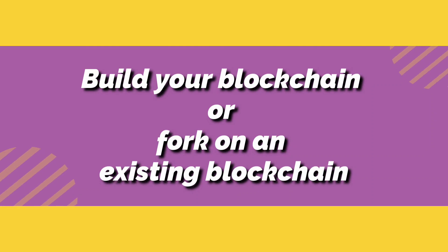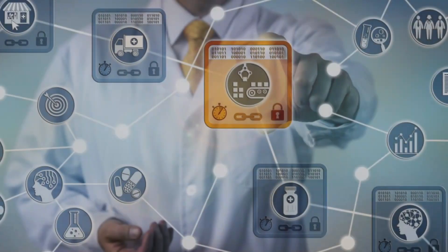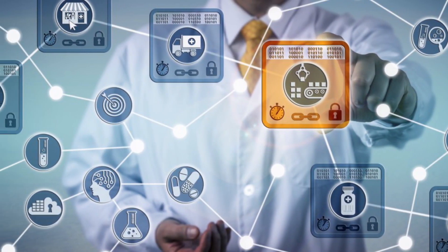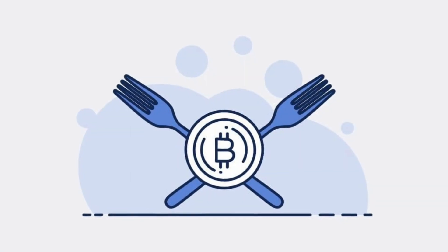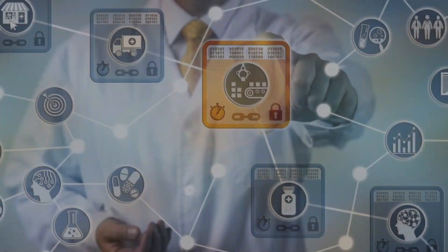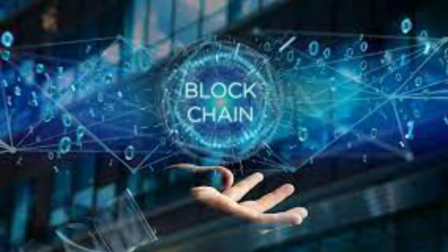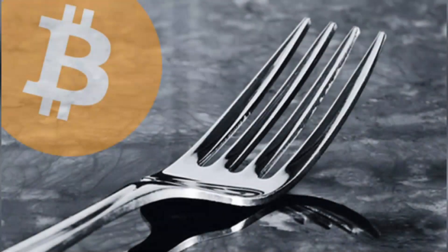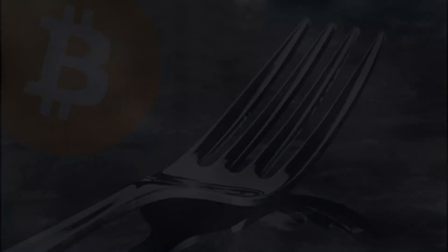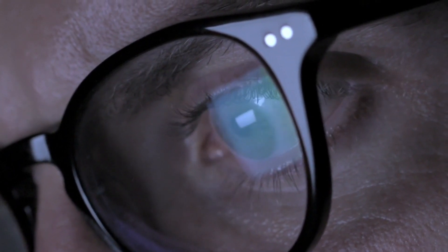Build your blockchain or fork on an existing blockchain. There are two methods to create your own cryptocurrency. You can either build your own blockchain or fork on an existing one. Both methods require technical knowledge, or you can take the help of a savvy developer. If you are building a blockchain, you can also take an existing blockchain and modify it for your new coin. On the other hand, you can fork an existing blockchain by taking the open source code. Open source code is available on GitHub.